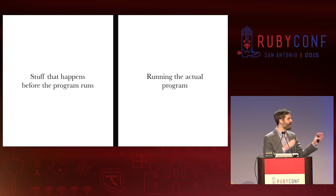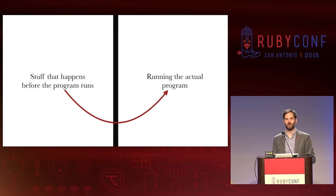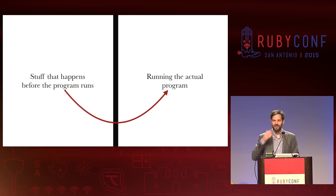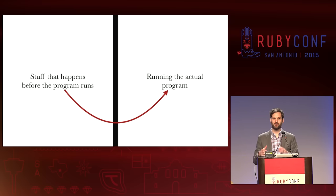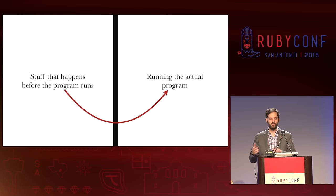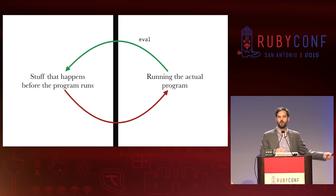You'll notice that one thing naturally goes to the other: the stuff that happens before the program runs happens before running the program, and then the program goes. But actually, this is a loop too. Any time you do eval — which you're not doing in your code, please don't write eval in your code — you're essentially going back to the beginning of this thing as well, and you may be doing this in a loop over and over.